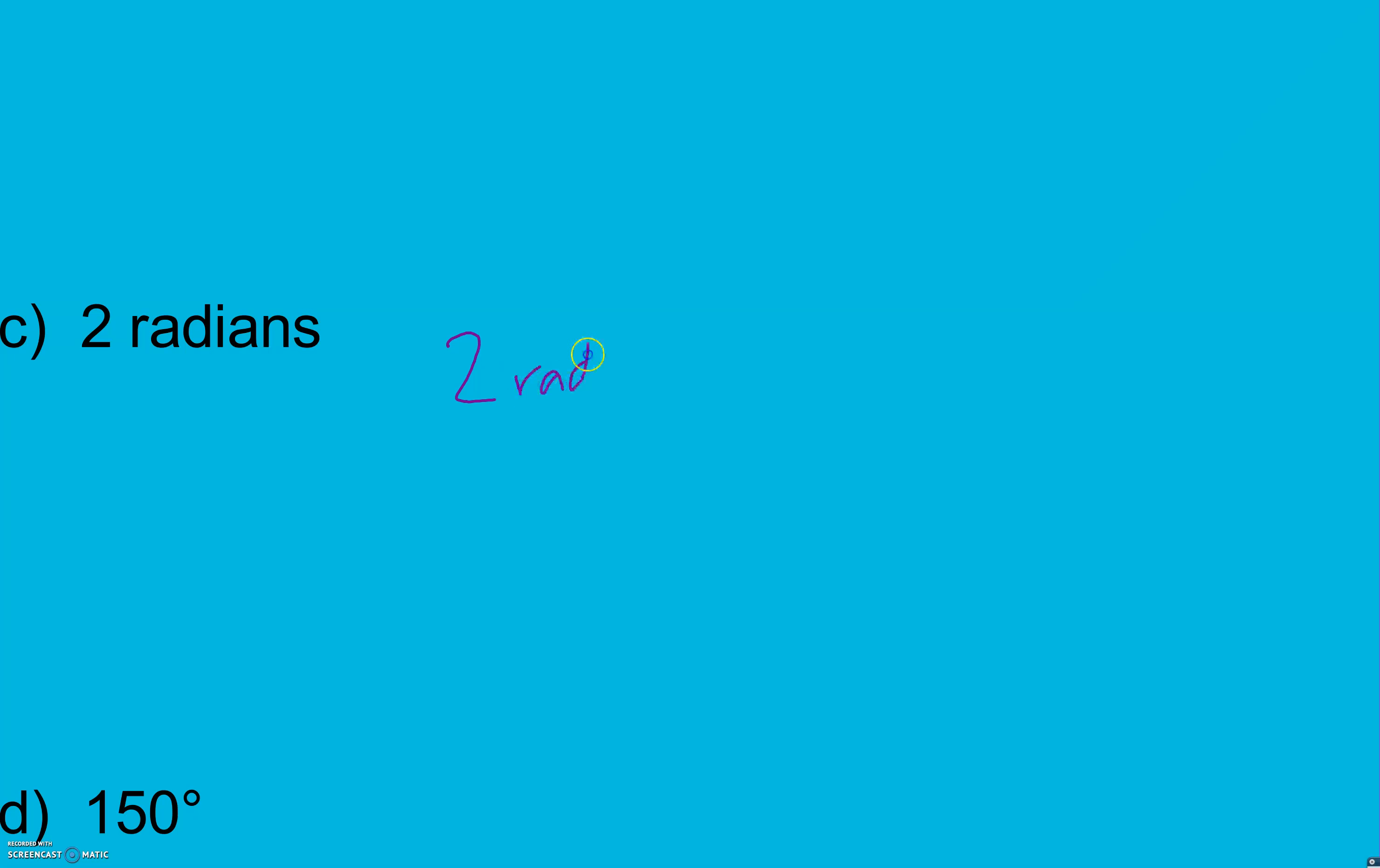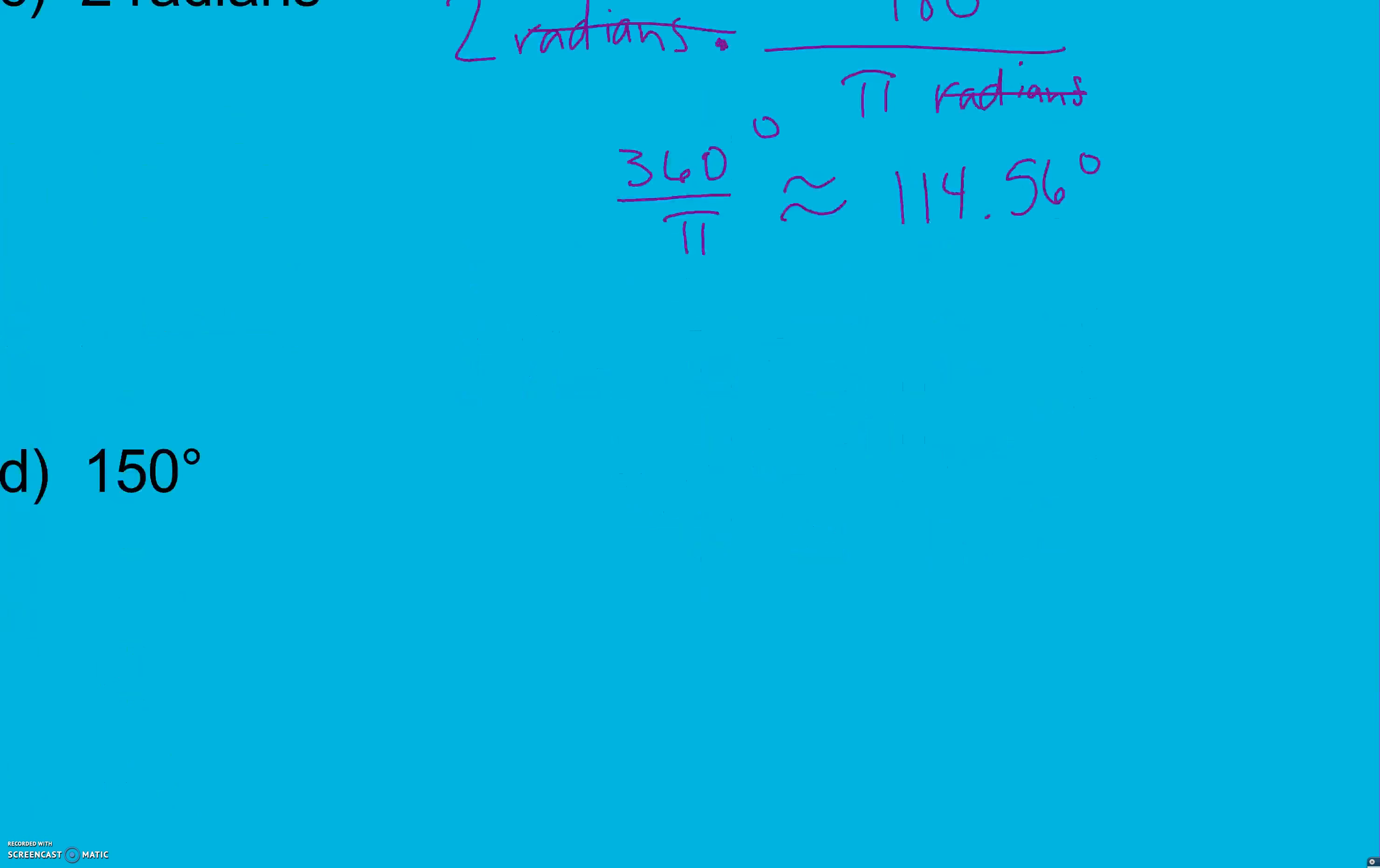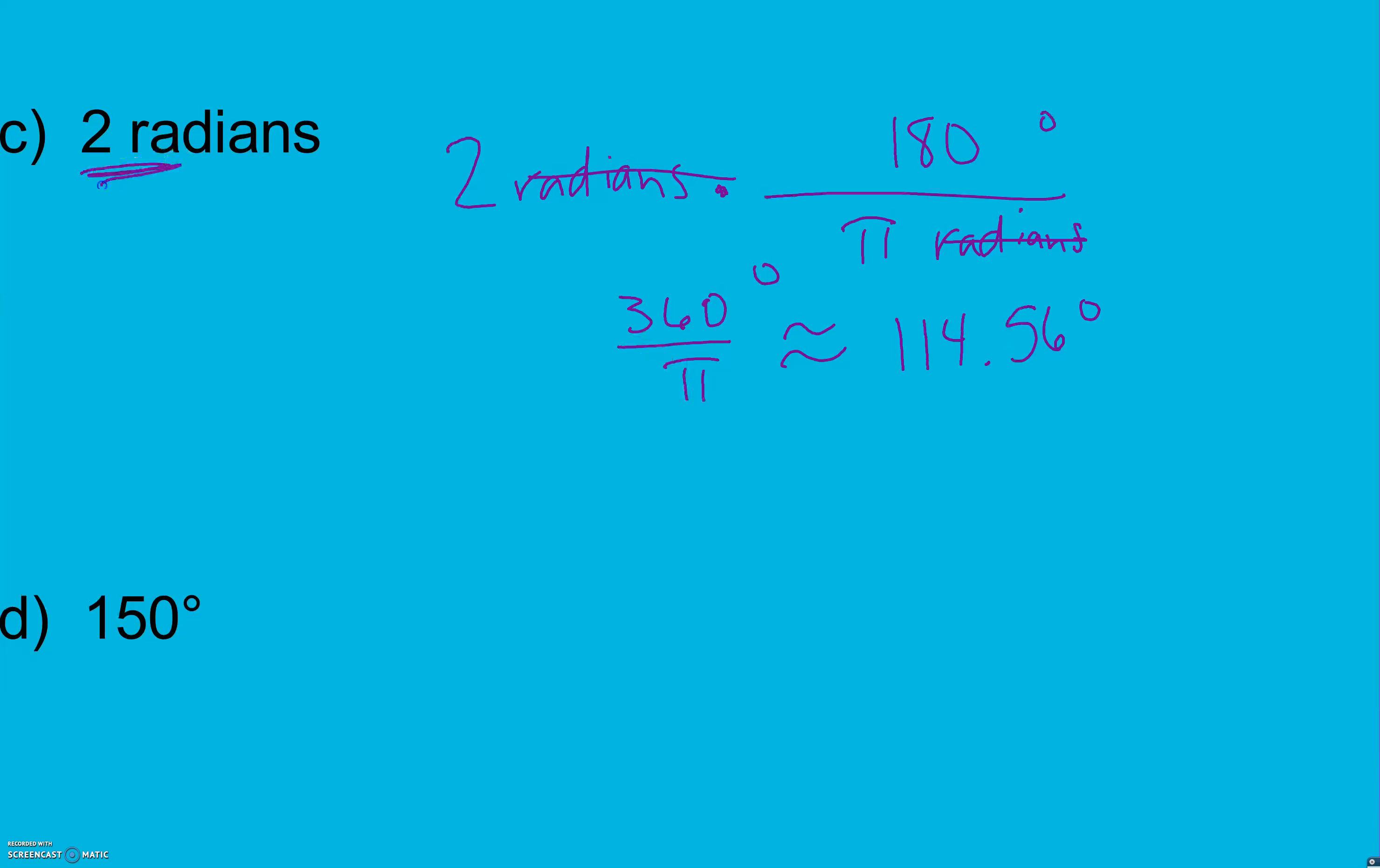2 radians times—we need radians to cancel. Looking for degrees: 180 degrees over π radians. Radians cancel and I have 360 over π degrees. Here it's approximately, if we type that in, 360 divided by π, we get 114.56. That's more helpful than saying 360 divided by π.